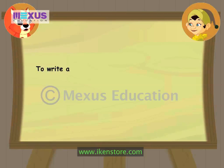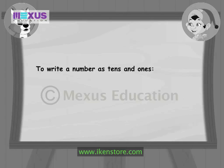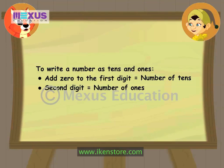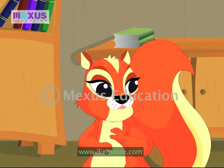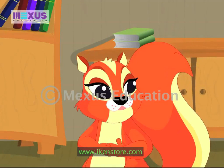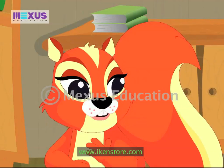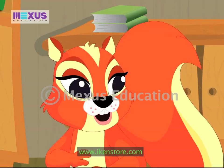Now, let me tell you a simple technique of breaking up numbers by expressing them as tens and ones. For any number less than 100, add a zero to the first digit — this becomes the number of tens. The second digit is the number of ones. Can you give us an example of this technique, Sandy? Sure! Now I can do this.